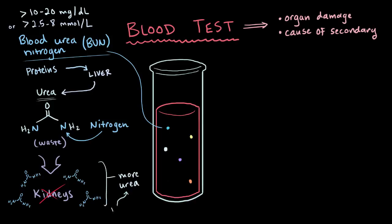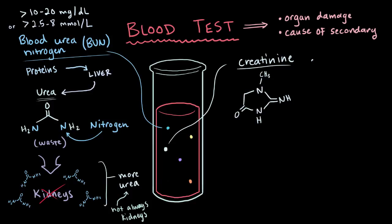But it's really important to remember that there are a lot of things besides kidney function that could influence your blood urea nitrogen levels. So it's always looked at alongside your creatinine levels, which are normally around 0.5 to 1 mg per deciliter, or 44 to 88 micromoles per liter.